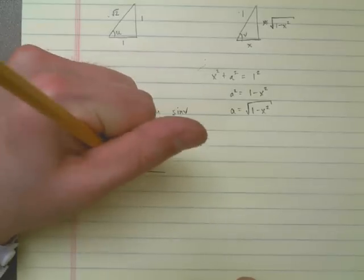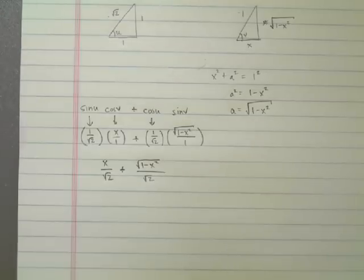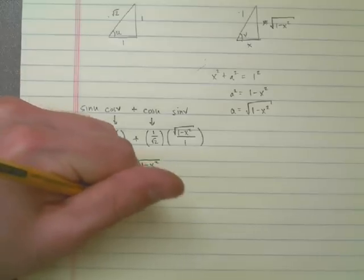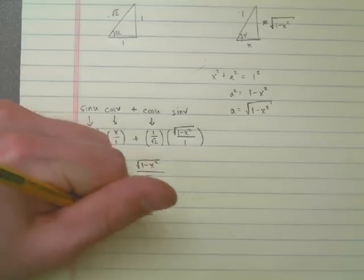sorry I forgot to put the plus sign here. I'm going to add the square root of 1 minus x squared, all over the square root of 2. Which means I can now combine them into one fraction. That is x plus the square root of 1 minus x squared, all over the square root of 2.